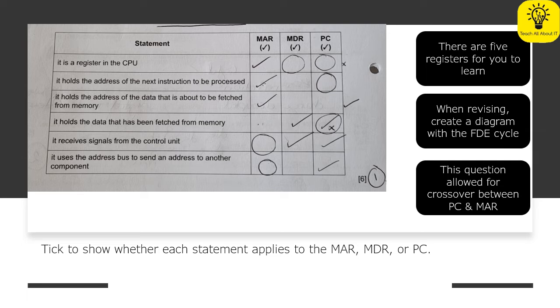So this particular question was interesting because it allowed for crossover between the program counter and the memory address register. Now if I was to be teaching this I would definitely not allow this in practice but just be aware that for the Cambridge IGCSE there is a little bit of leeway between the PC and the MAR. For all other specifications there absolutely is not and I would thoroughly recommend learning this in the stricter way purely because if you're going on to A level you're not going to get that crossover.